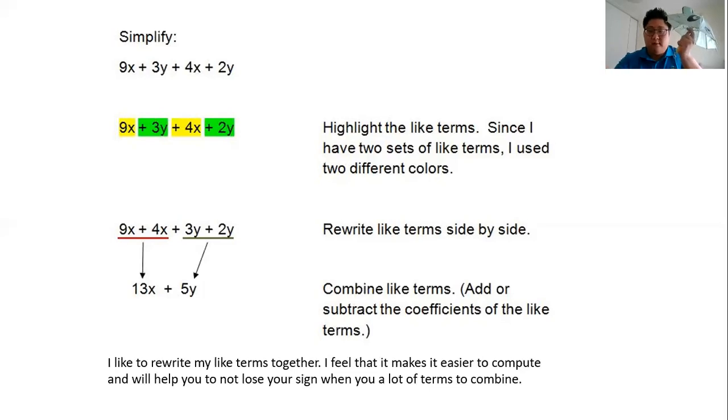Then we combine the like terms. We add or subtract whatever the sign is to give us our final answer. I like to write it in alphabetical order if possible, just a little bit OCD like that, but if you write 5y plus 13x, you are still equally correct.